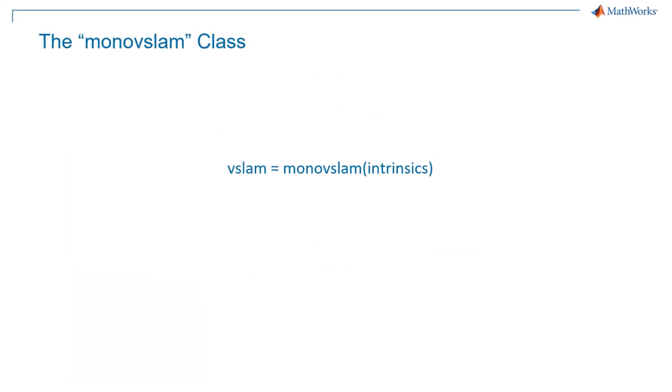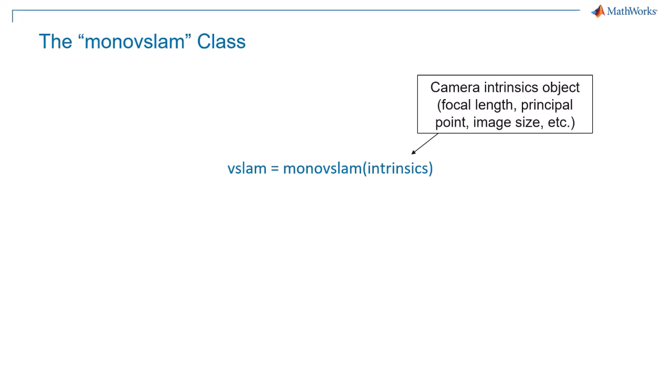MonoVSLAM can be set up using your camera's intrinsic parameters and then fed a few key image frames, which will allow it to query camera trajectory and run calculations for mapping points. All of the data can be visualized throughout the process, allowing for easy monitoring and data comprehension as successive camera frames track 3D position in real-time.